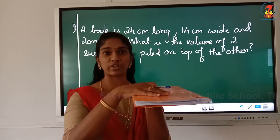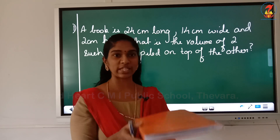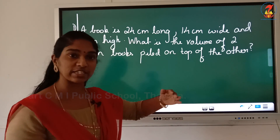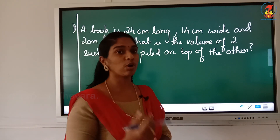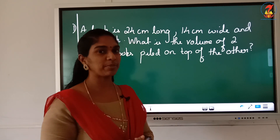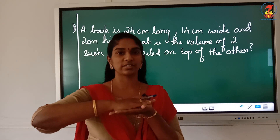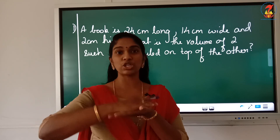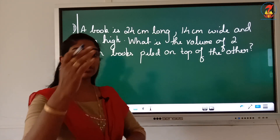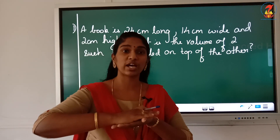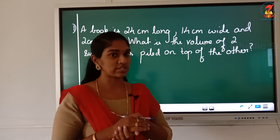You keep the same type of book on top of that, you get another solid. When one book is kept on top of the other, the height is changing. What will the height become? Can anybody tell? I have kept two books together. For one book, the height given is 2 centimeter. So if I keep the same type of books one on top of the other, the height will become double — that is, the height becomes 4 centimeter.